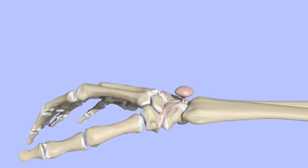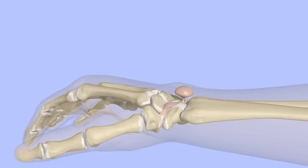Ganglion cysts are most common at the wrist, but they can occur over other joints and tendons. They may begin to put pressure on nearby structures, which can be painful. They can also cause unsightly lumps.